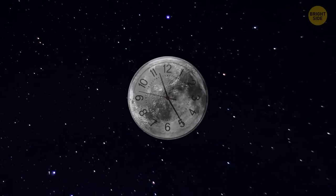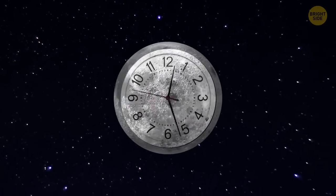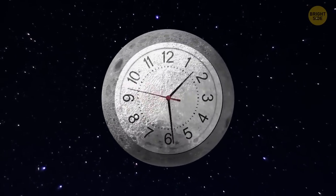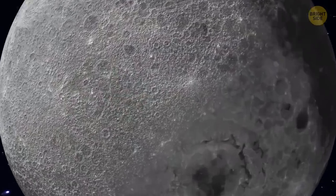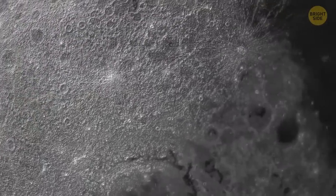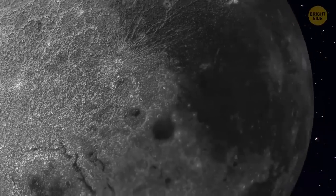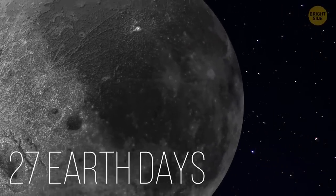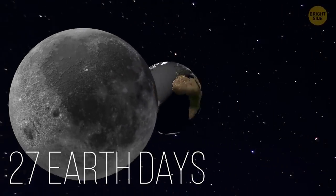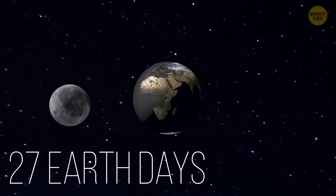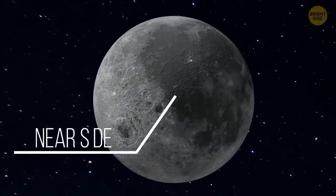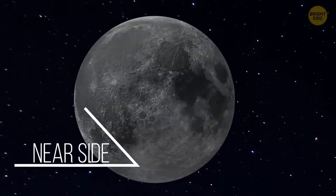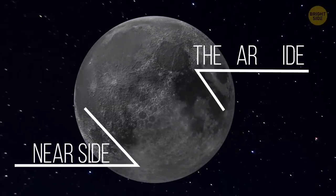If you observe the Moon for some time, you may notice that it's the same face staring at you every night. The truth is that the Moon does rotate, but very slowly. It takes our planet's natural satellite 27 Earth days to rotate around its axis. Plus, the Moon rotates at the same rate that it orbits Earth. The side we always see is called the near side of the Moon. And the side that's not facing us is, you guessed it, the far side of the Moon. It also has the nickname the dark side of the Moon.